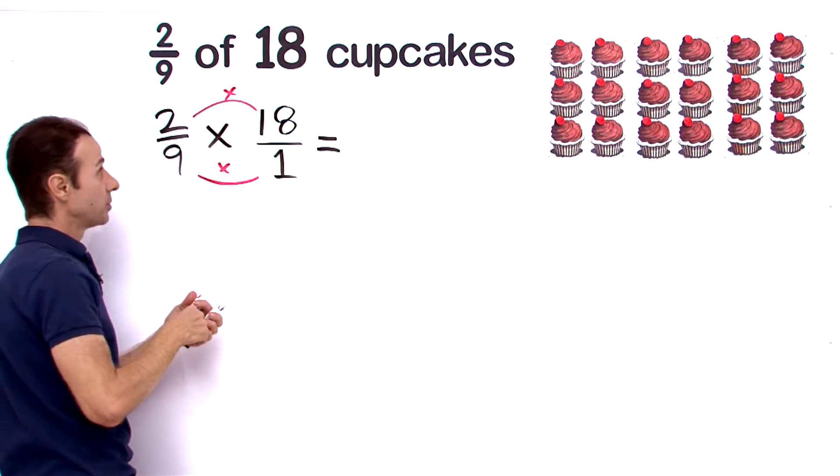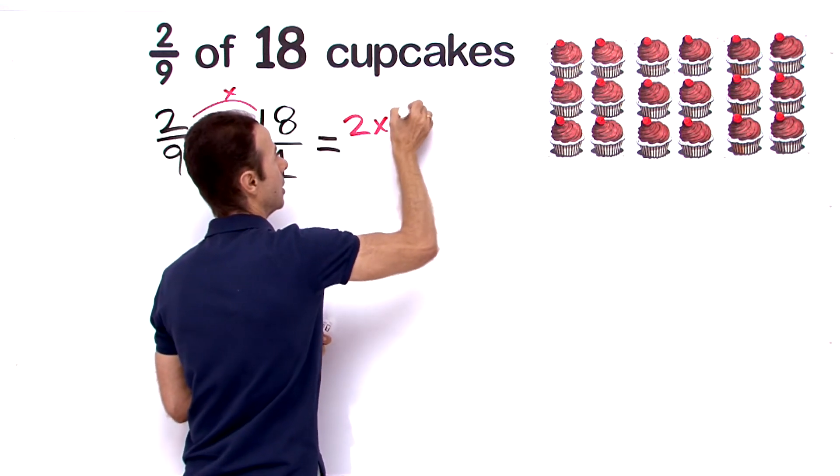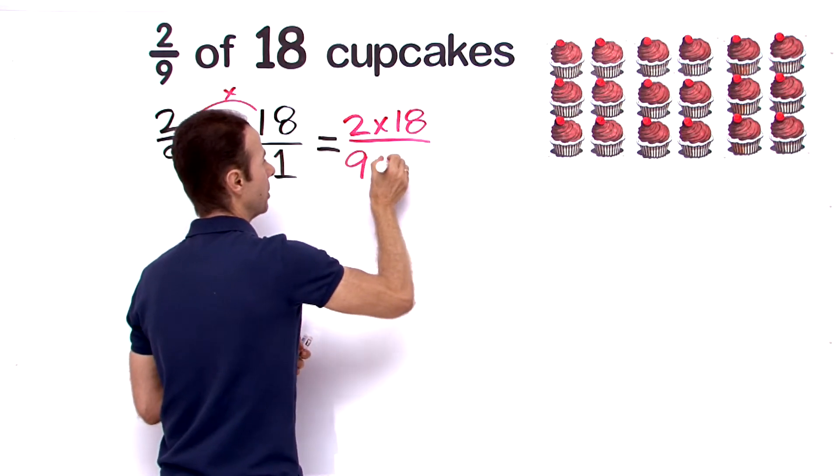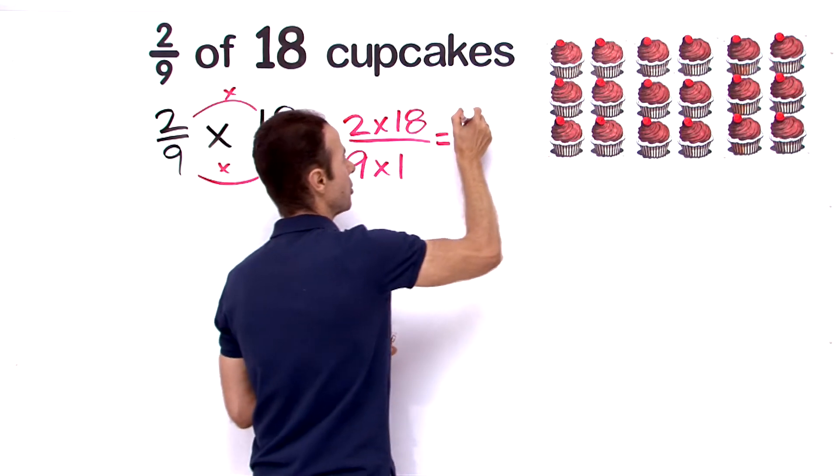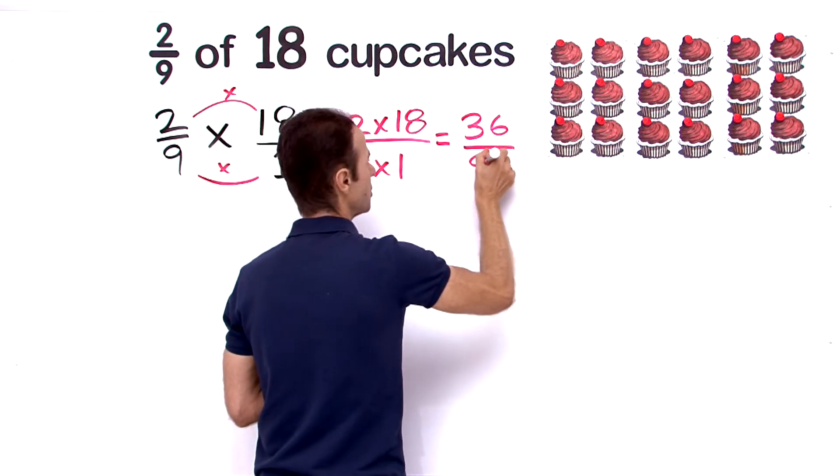Alright, let's work this out. Top times top, that's 2 times 18 on the top, and then 9 times 1 down below. What is that equal? 2 times 18 is 36, 36 over 9 times 1 is 9.